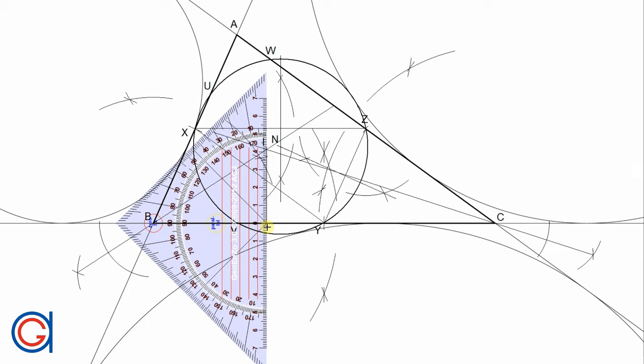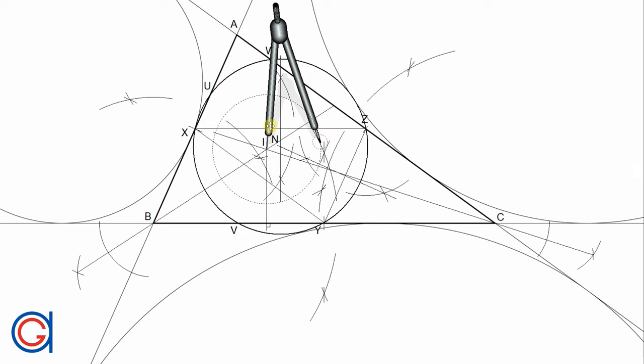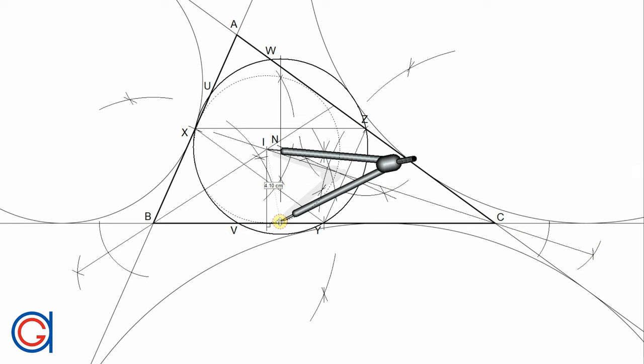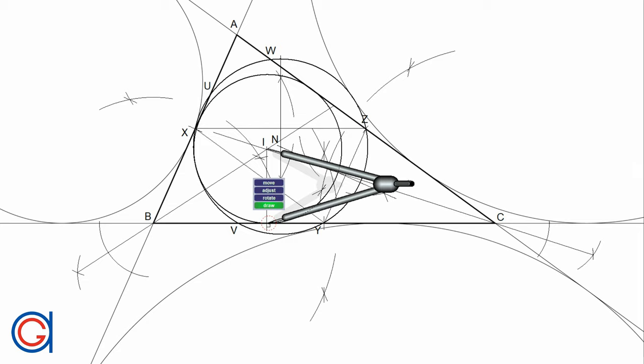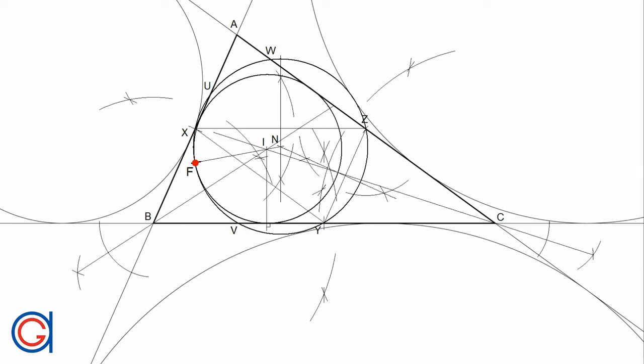Now, from the in-center point I, we draw a perpendicular line until it cuts the base of the triangle BC at a tangent point of the in-circle. We then set the compass on point I, and with a radius from I to that tangent point, we draw the in-circle in a thicker line. Now that we have the two circles — the nine-point circle and the in-circle — we draw a line from center point N through center point I, and elongate it until it cuts the circumference of both circles at the same tangent point, which is known as Feuerbach's point F, as can be seen here in a red dot.